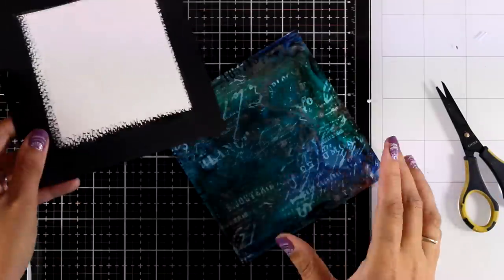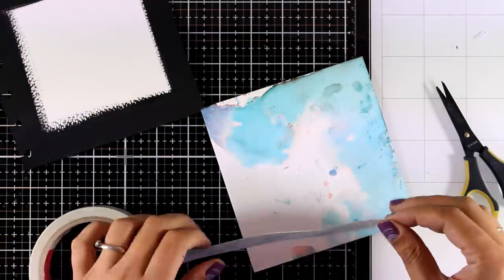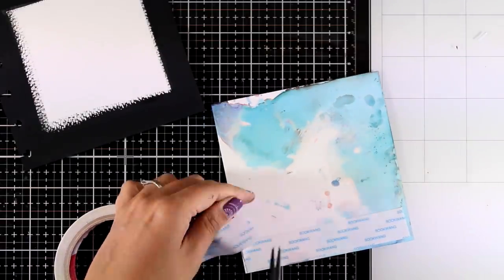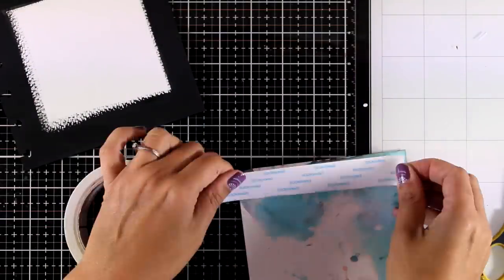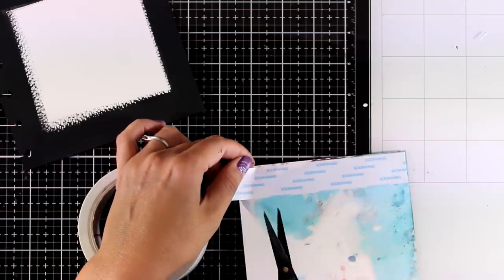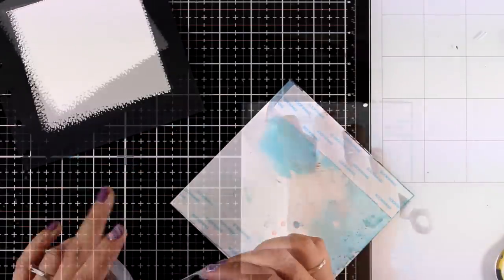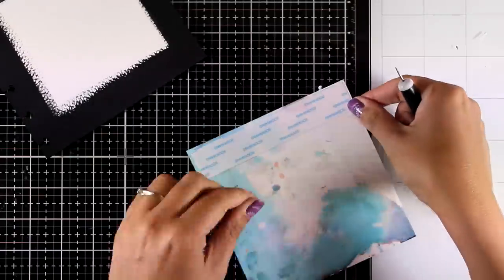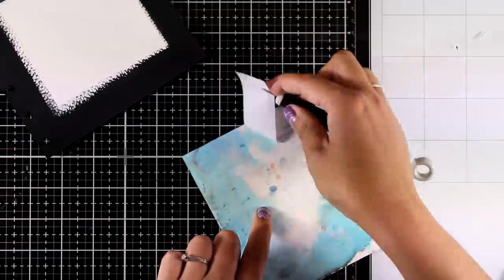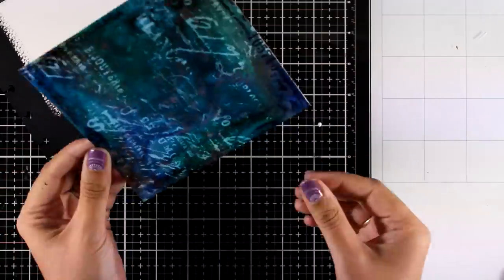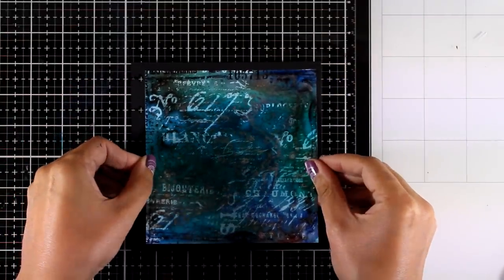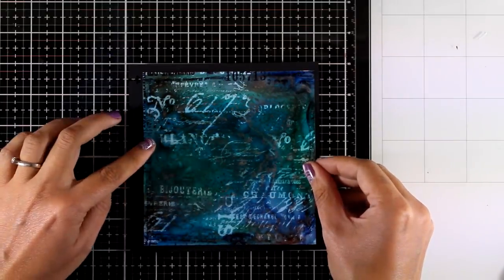I have already applied some black acrylic paint all around my 6x6 page. Now at the back of my yupo paper I'm going to add some double sided tape. Of course you can use any type of glue that you like. I find that sticky tape is strong enough to make a good bond between the paper and the yupo. Now I can place it on top making sure that I don't cover up the holes that I have there for the disks of my disk bound journal.